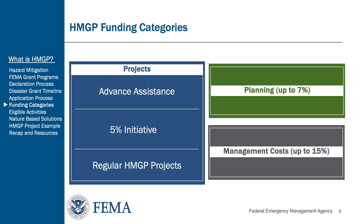There are three funding categories: projects, planning, and management costs. We will review these categories in more depth up next.